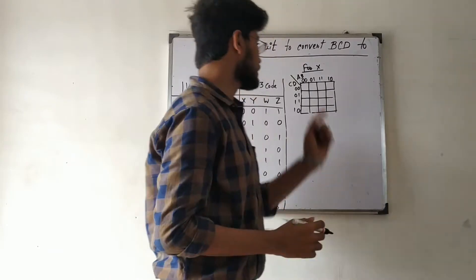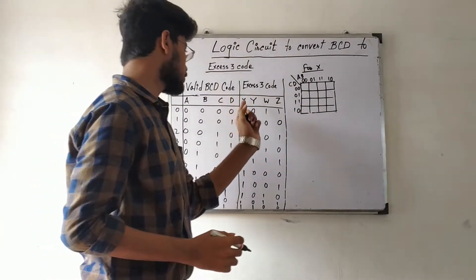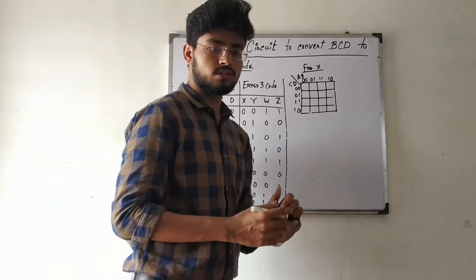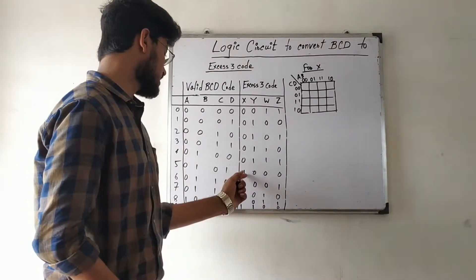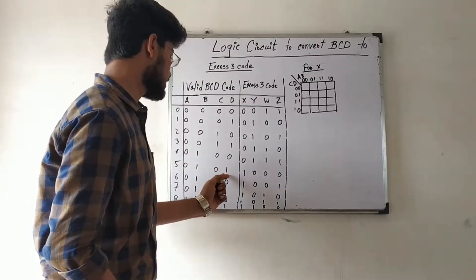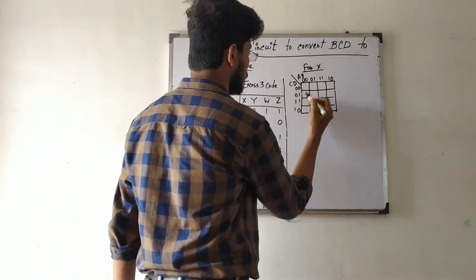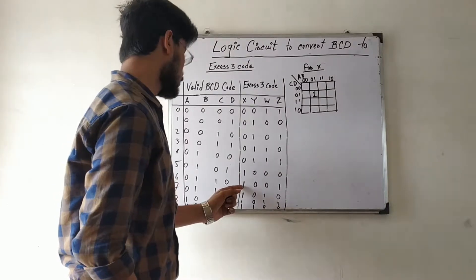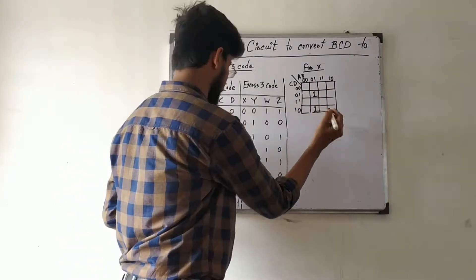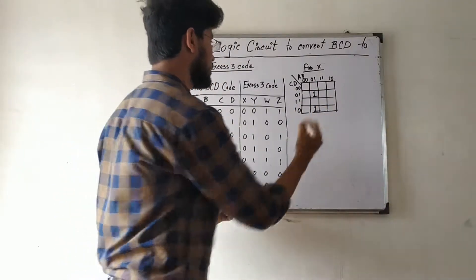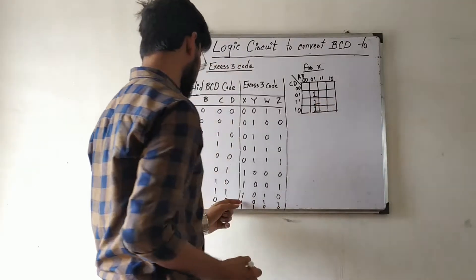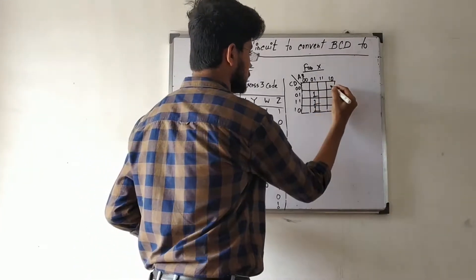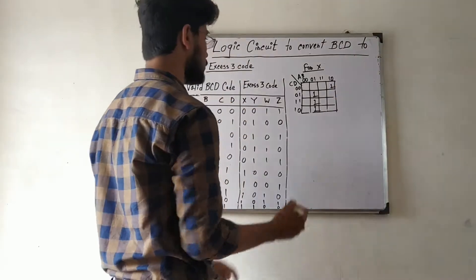For the X output, we identify which combinations give a high output and place 1s in the corresponding K-map cells. We fill in the 1s based on the BCD-to-Excess-3 truth table for the valid input codes 0 to 9.